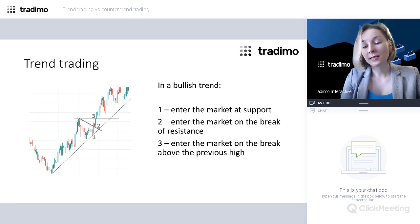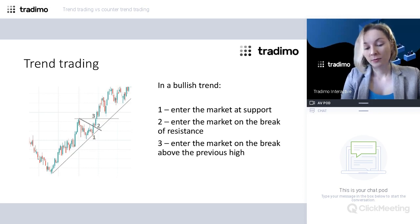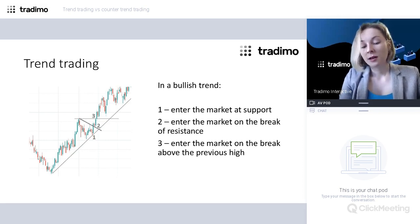Support and resistance levels by definition mean that the probability these levels will hold the price from further movement is greater than the probability the price will break beyond that level. So at point one, the possibility that the price will turn higher is greater than the possibility it will continue down — making it a valid entry for a buy trade. This is the first option.